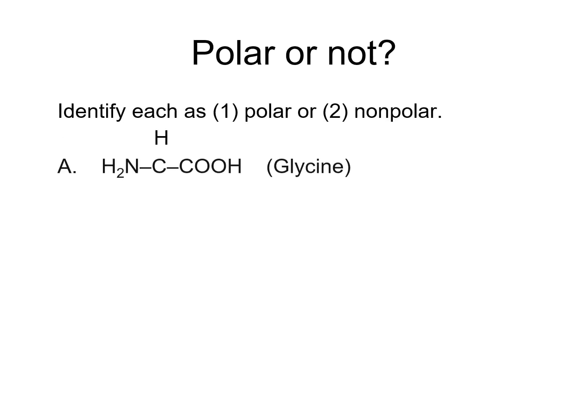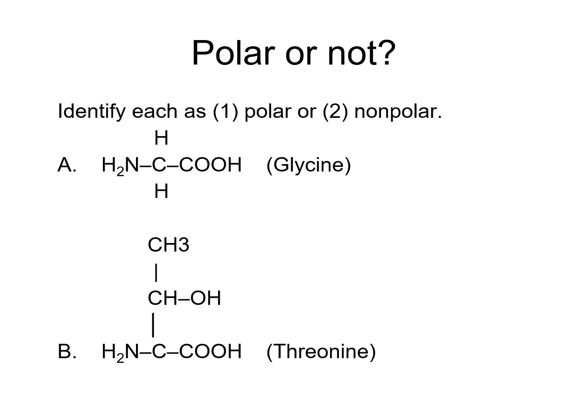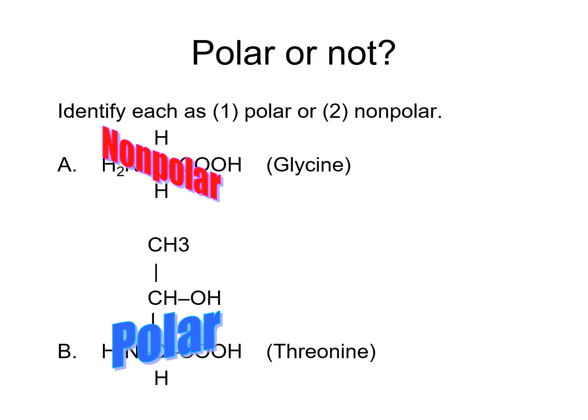Let's look at two amino acids — A and B — and identify whether they are polar or non-polar. Is glycine polar or non-polar? Glycine is non-polar because the side chain hydrogen does not contain any oxygen, sulfur, or nitrogen. Is threonine polar or non-polar? Threonine is polar due to the OH group on its side chain.